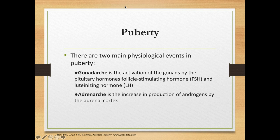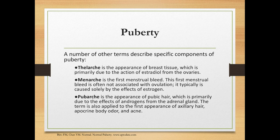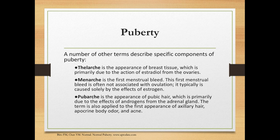There are two main physiologic events during puberty: gonadarche, which is the activation of the gonads by pituitary hormones FSH and LH; and adrenarche, the increase in production of androgens by the adrenal cortex. Thelarche is the appearance of breast tissue, primarily due to estradiol from the ovaries. Menarche is the first menstrual bleed, often not associated with ovulation, caused solely by the effects of estrogen. Pubarche is the appearance of pubic hair, primarily due to androgens from the adrenal gland, and also applies to axillary hair, apocrine body odor, and acne.